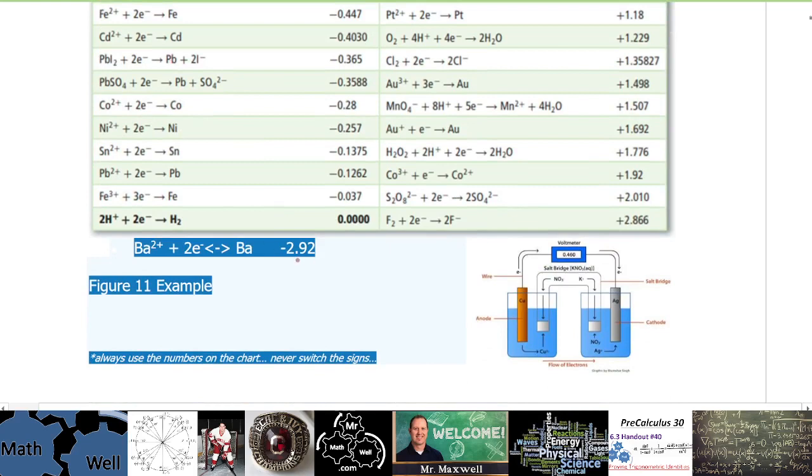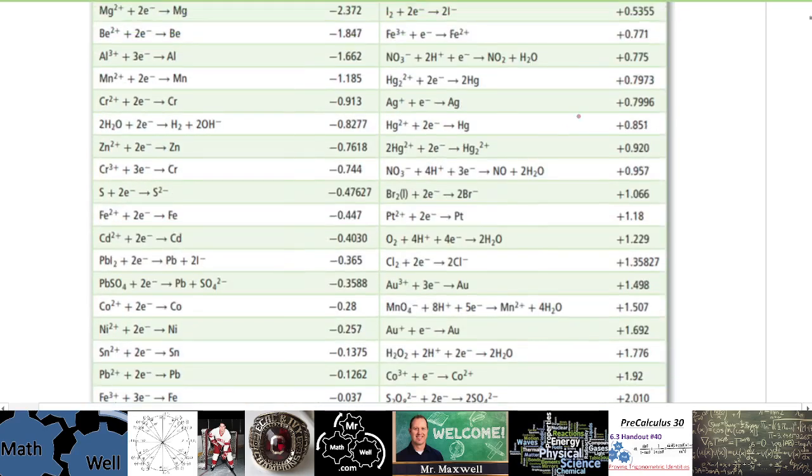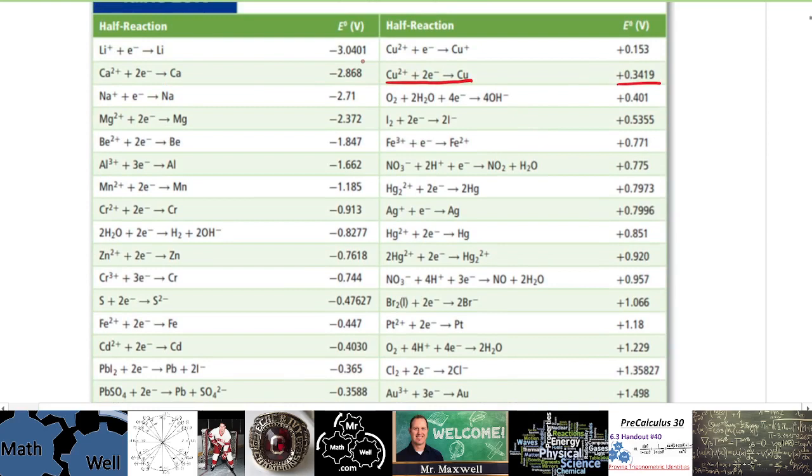And what about barium? Now barium was a bit of an addition here, it's not on this chart so I did give it to you, that's negative 2.92 volts. So negative 2.92 fits right in here, barium is right there, negative 2.92.